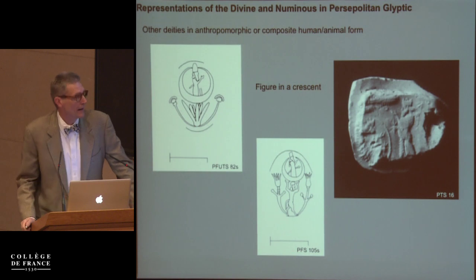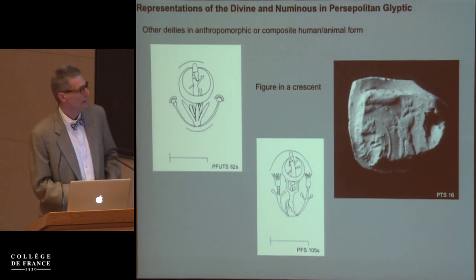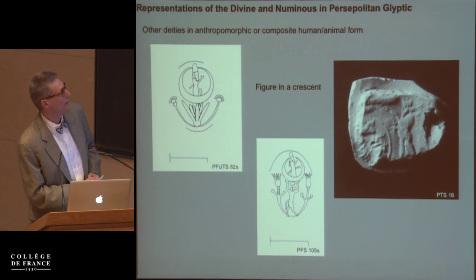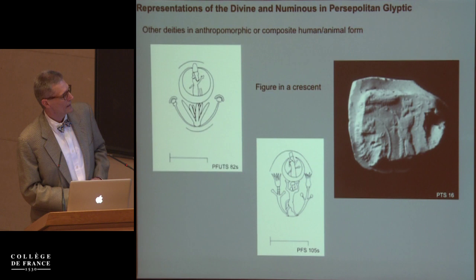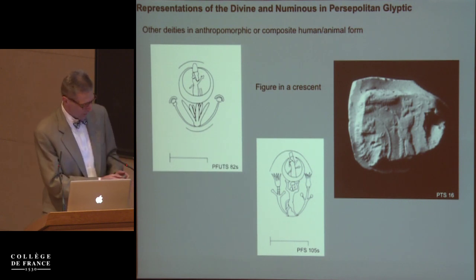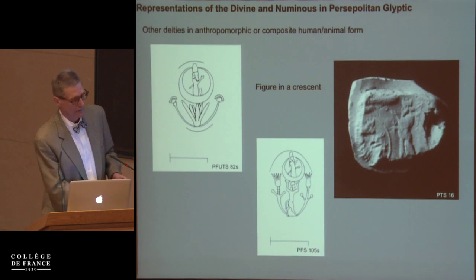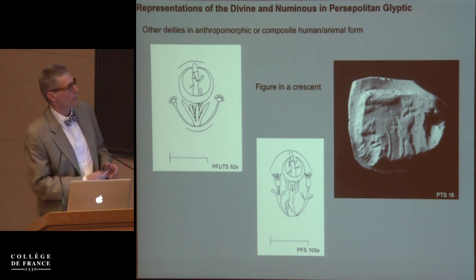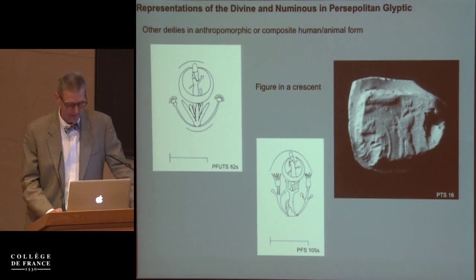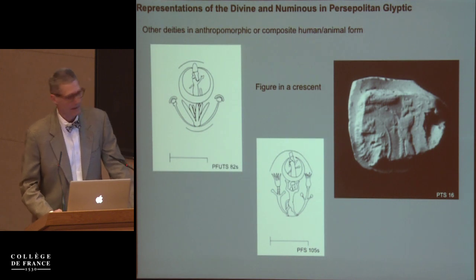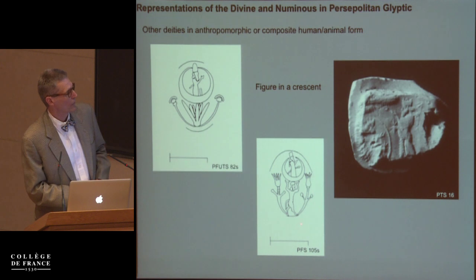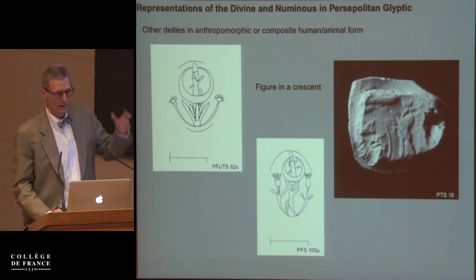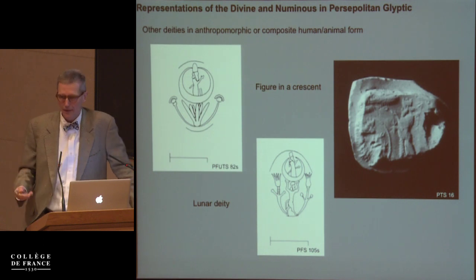Another traditional way of depicting the divine and the numinous is a figure within a crescent or circle. The Persepolis examples tend to show a partial crescent or almost a full one. This imagery appears in three seals in the Treasury Archive where the circle goes all the way around the figure. Whether we have two separate entities or one, this is a very traditional Assyro-Babylonian way of depicting the divine. Note again the use of the bull man as an atlas figure indicating that you're within a divine or numinous space — the logical assumption is that we have to do here with a lunar deity.